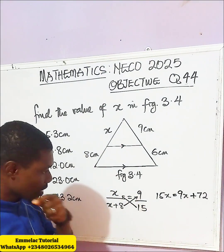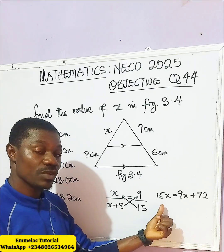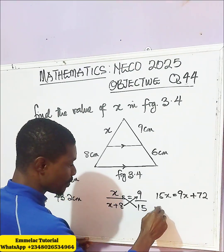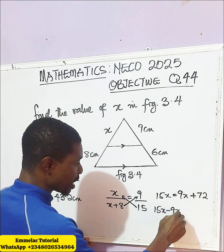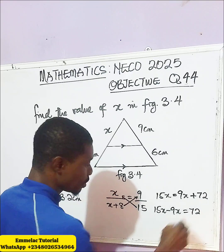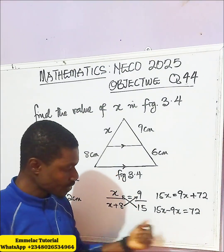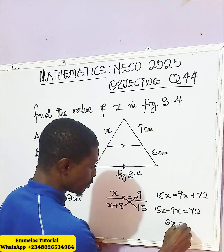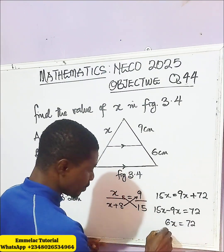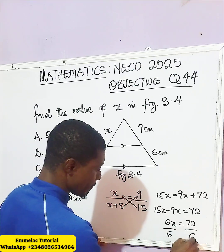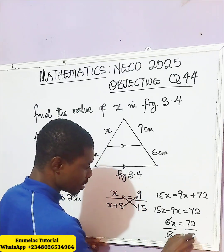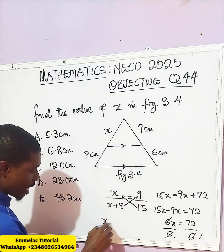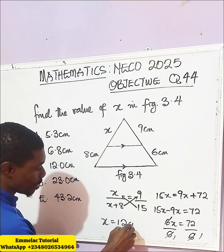Collecting like terms, 9x moves over to the left-hand side with a minus sign. So we have 15x minus 9x, which gives us 72. That gives us 6x equals 72. When we divide both sides by 6, we get x equals 12 cm.